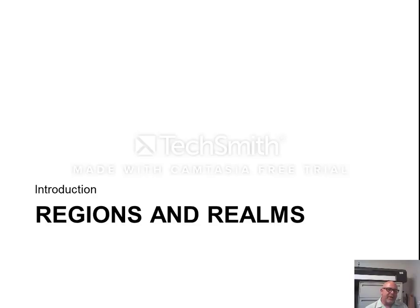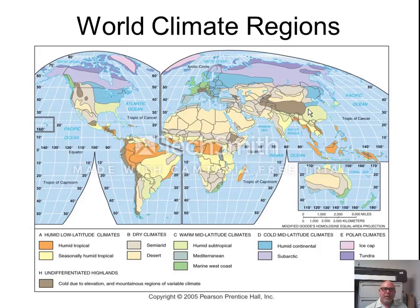Regions in general are areas that share some type of characteristics or activity. For example, this map shows world climate regions, or areas of the earth that share some climate characteristics.